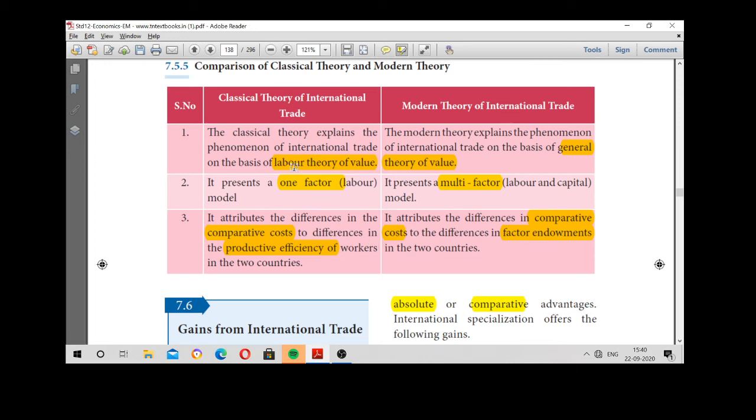So you have to write only the three points. The first point, labor theory of value, general theory of value. One factor, multi-factor. Comparative cost to productive efficiency of workers. Here comparative cost to factor endowment in the two countries. Are you clear?